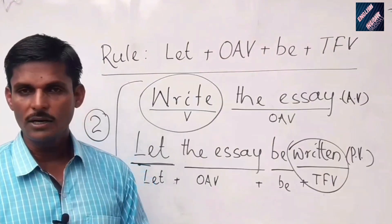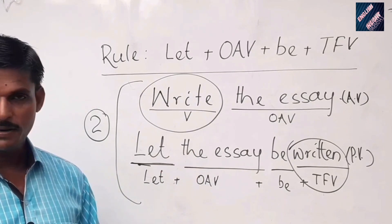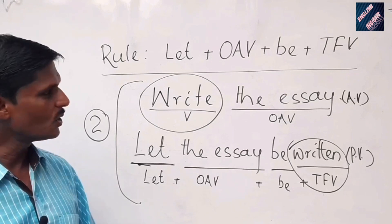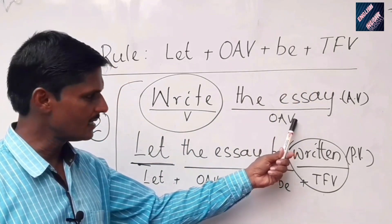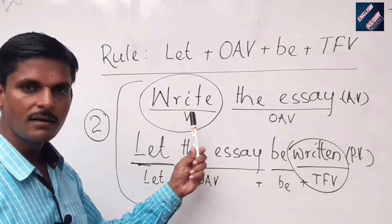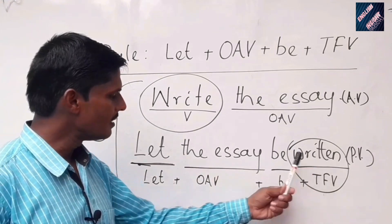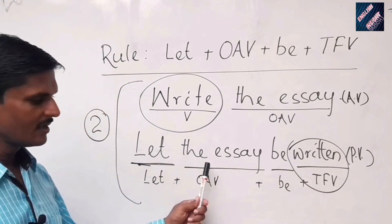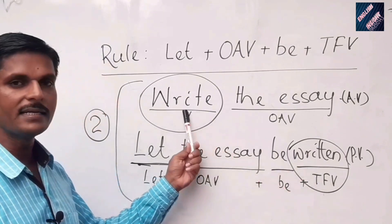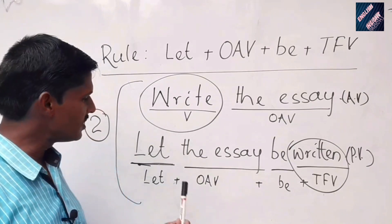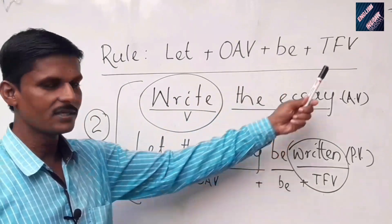Sentence number two: 'Write the essay' — this is active voice. Applying the rule LET + OAV + BE + TFV: 'the essay' is the OAV, 'write' is the verb, and its third form is 'written.' So the passive voice is 'Let the essay be written.' Active voice: 'Write the essay.' Passive voice: 'Let the essay be written.'